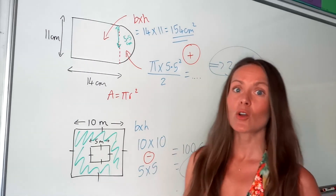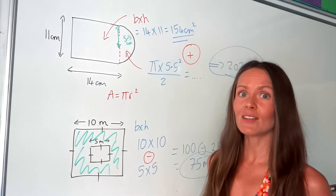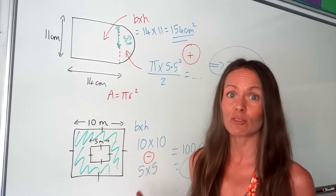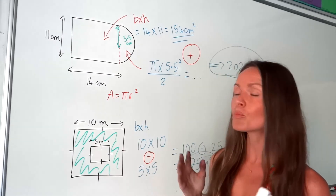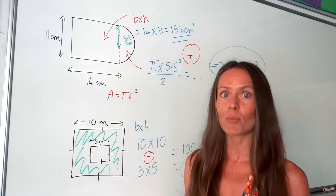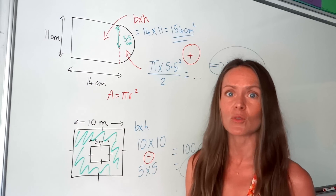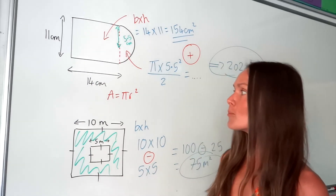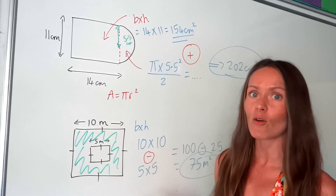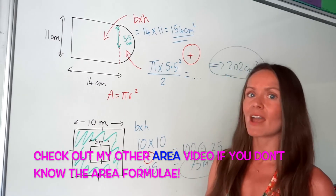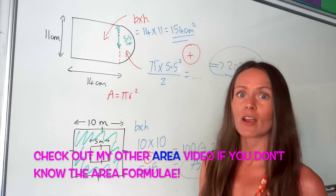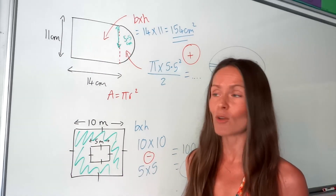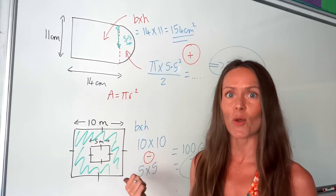So there you go — compound shapes. They're actually not that difficult. When you get presented with a really tricky-looking shape, just break it down into simple shapes like rectangles, squares, and triangles, because it's not as hard as you think. Make sure you know all the formulae off by heart to work out the area of squares, rectangles, triangles, trapeziums, and circles, because you need to know those in order to work out these compound shapes.